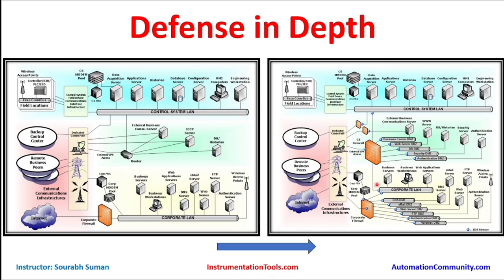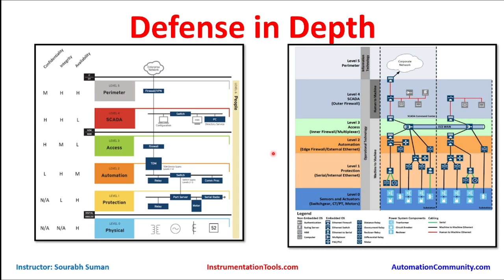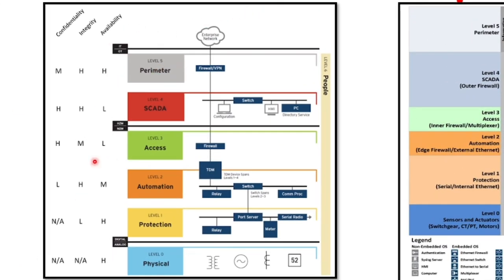With just two or three technologies implemented, we are now moving toward a much more secured defense in depth architecture. Looking at a CIA model mapped to each ICS level: at the physical level zero, confidentiality and integrity are less critical because all communications are voltage-based, so availability is the highest requirement. At the protection level one, with port servers, meters, serial devices, and radio relays, availability is always the highest requirement and low integrity is acceptable.